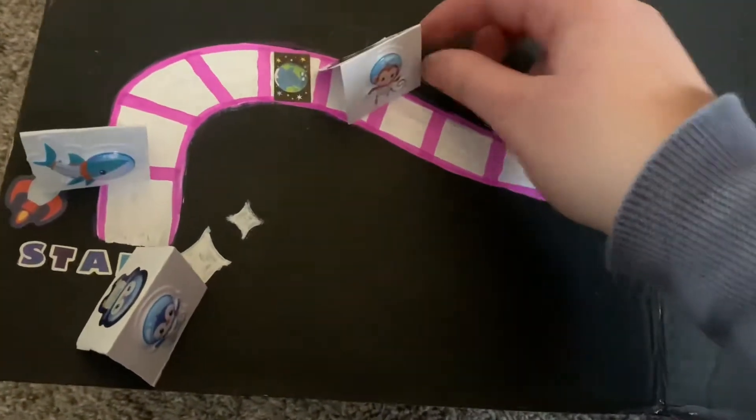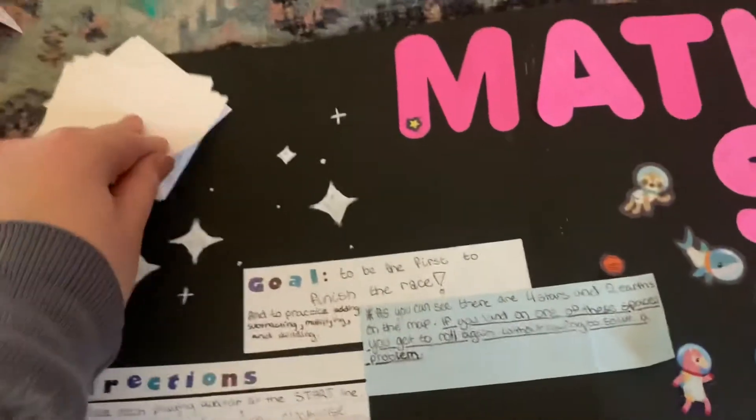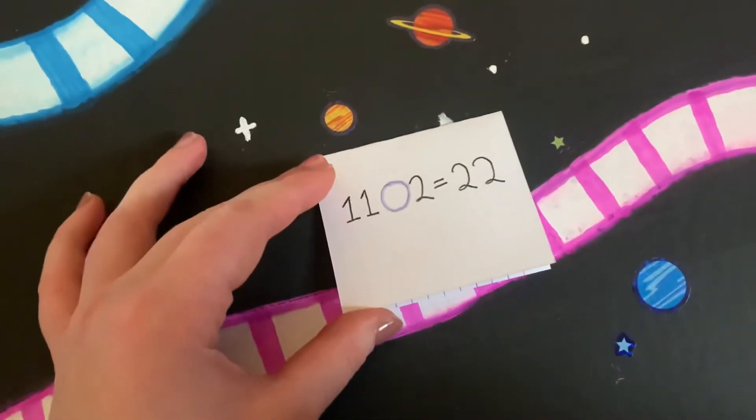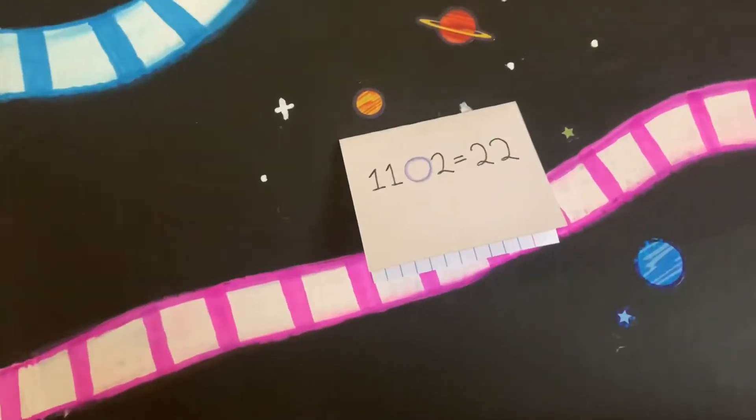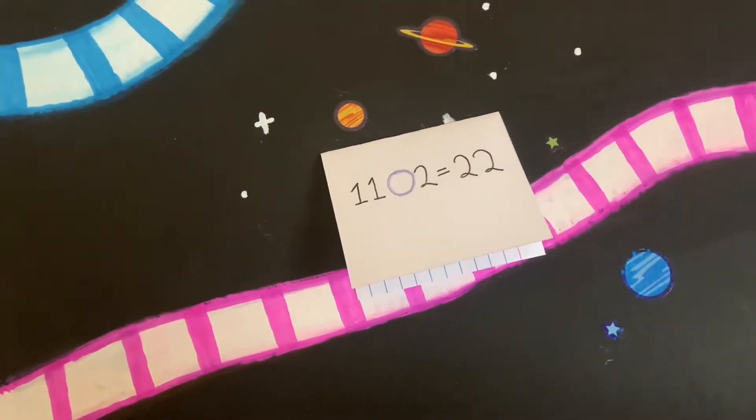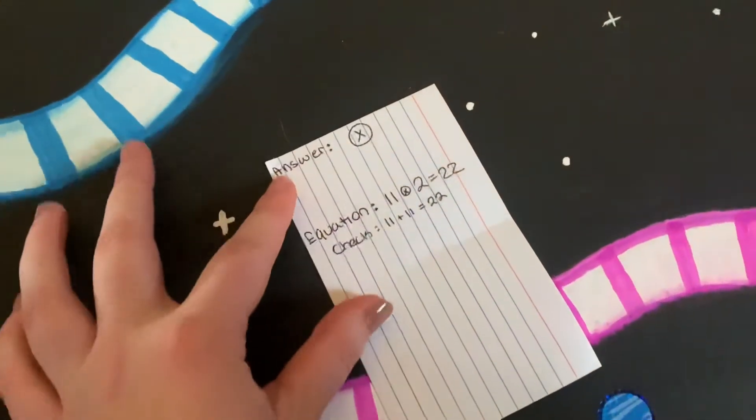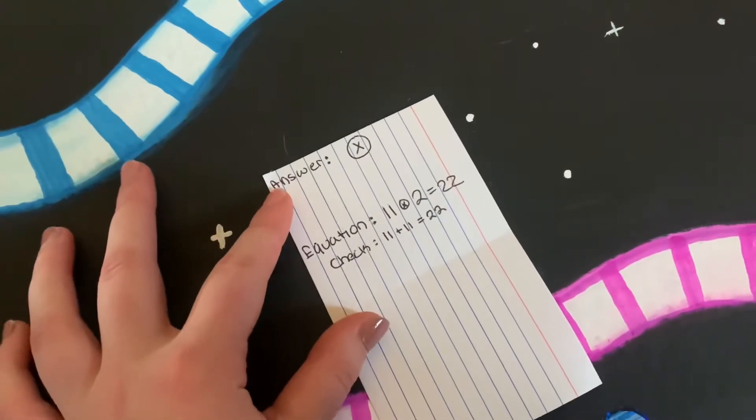Then you will pick up an index solving card and solve for the missing symbol. In this example, we use 11 blank 2 equals 22. The missing symbol is multiplication. The answer will be located inside the index card with an explanation of how to solve.